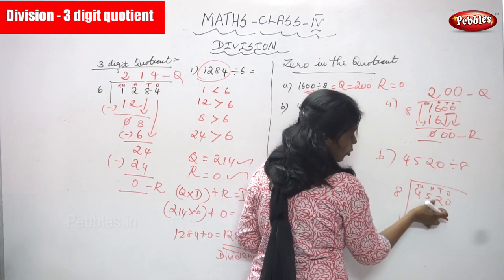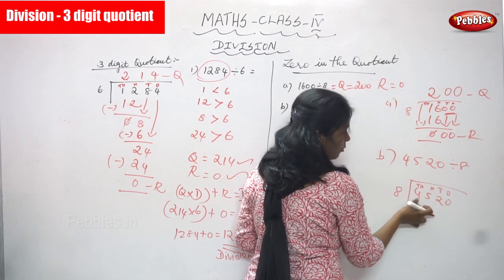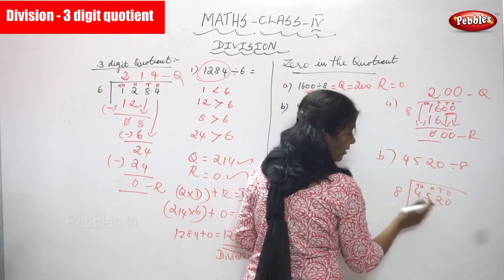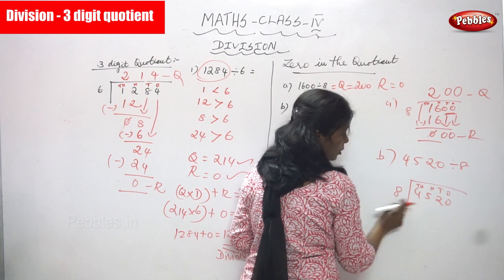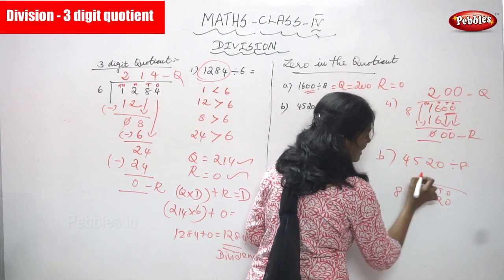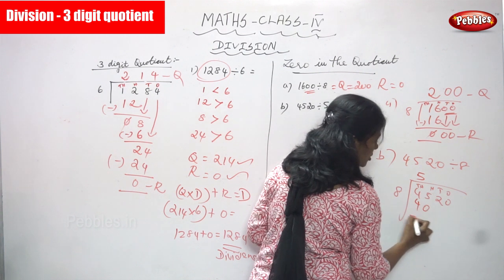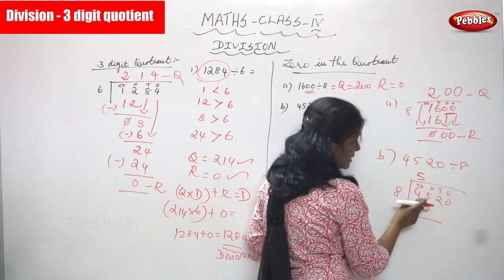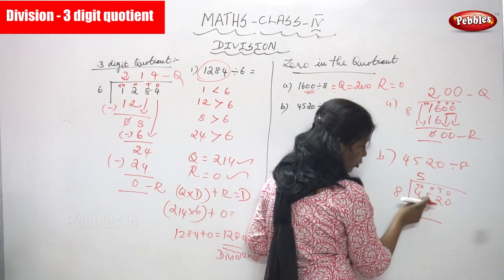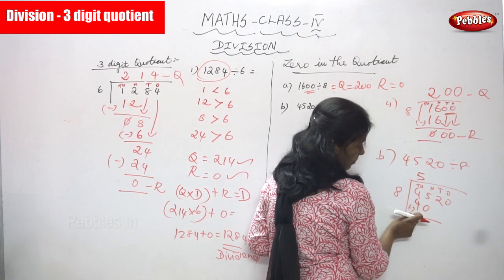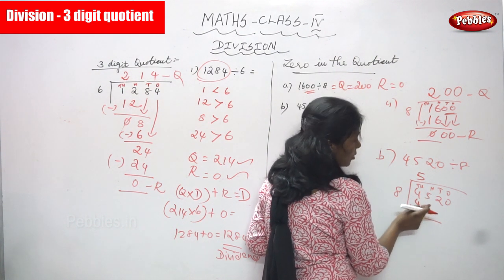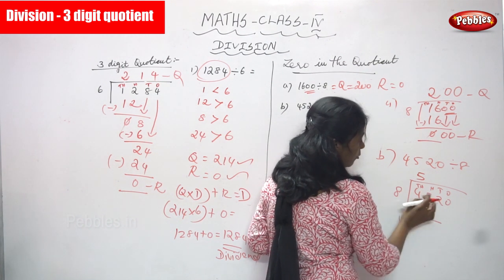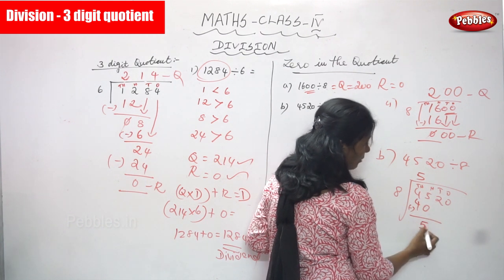The hundreds place value is 5. Combine 4 and 5 to get 45. 45 is greater than 8. In 45, how many times does 8 go? 8 fives are 40 — write 5 in the quotient place. Write 40 below 45; it is the closest value less than 45. 45 minus 40 equals 5.